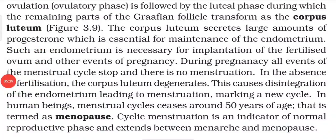If fertilization does not occur, the corpus luteum starts degenerating. Due to the degeneration of the corpus luteum, the endometrium also starts degenerating — because the endometrium maintains itself only in anticipation of a fertilized ovum. As a result, the progesterone level decreases, the endometrium degenerates, and this causes menstruation.